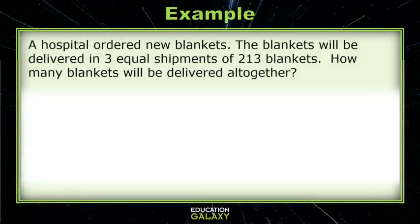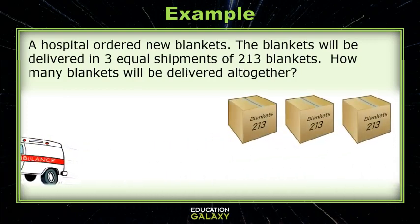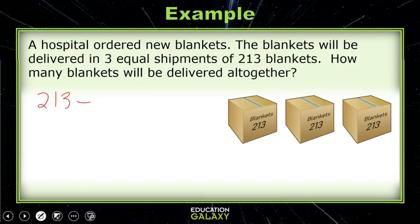Let's look at this example. A hospital ordered new blankets. The blankets will be delivered in three equal shipments of 213 blankets. How many blankets will be delivered all together? We have 213 in the first box, 213 in the second box, and 213 in the third box. That would be 213 plus 213 plus 213, or three groups of 213.